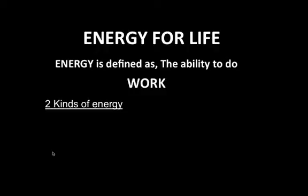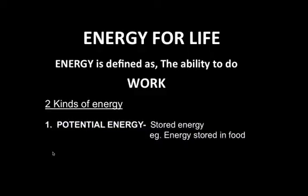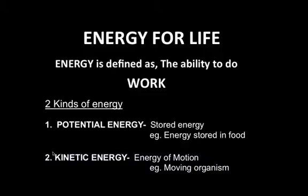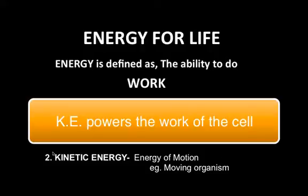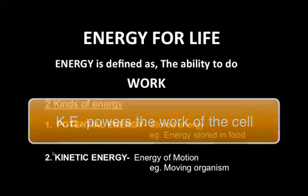There are two kinds of energy. Potential energy, which is stored energy — the energy in the bonds of molecules of food have stored or potential energy, sometimes called chemical energy. And then there's kinetic energy. When the bonds in food molecules are broken, energy is released. This energy powers the work of the cell and therefore the work of the organism.